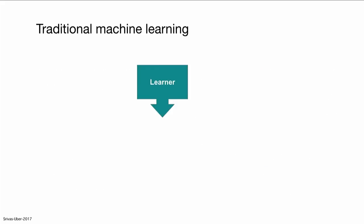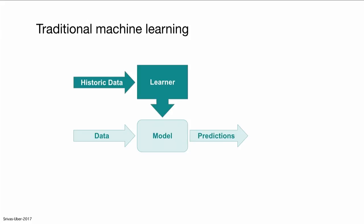So, what is traditional machine learning? Let me just quickly recap. Well, you have a learner, which is a program that you wrote. You provide historic data called training data, and you create a machine program called a model, and then you execute this on live data and try to predict. And usually, how do you use these predictions? Your decision-making is done based on either a manual query, or you have some automatic programs that run and figure this out.